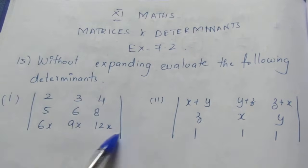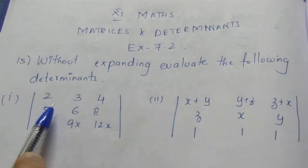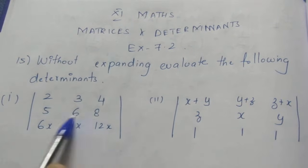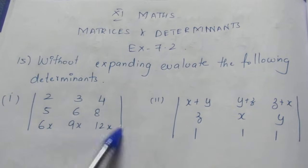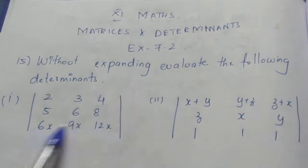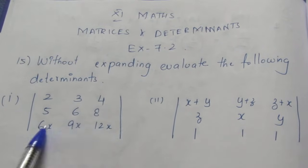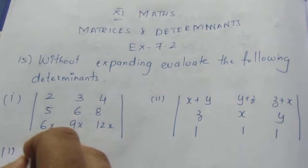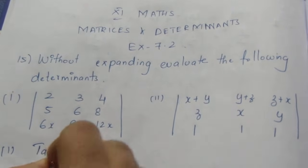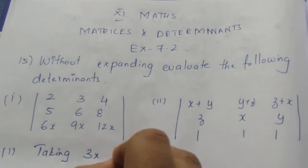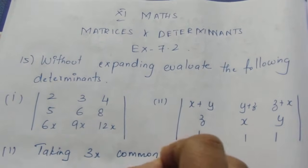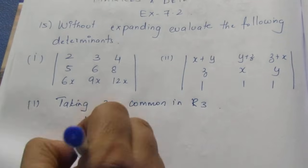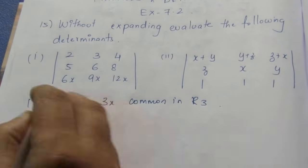We can take 3x common from row 3. If you want to perform row operations, you can subtract or add a row or column. So we take 3x common out from row 3.